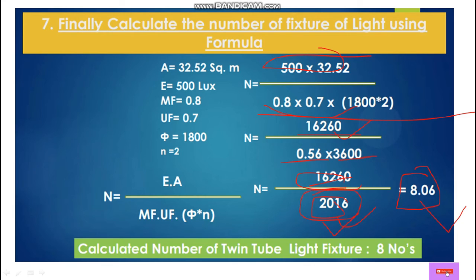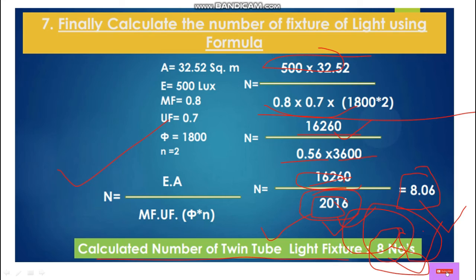So this is the number of light fixtures. The calculated number of tube light fixtures is 8. So how many light fixtures are required for the classroom? 8 numbers. We have now calculated that 8 twin-tube light sets are required.